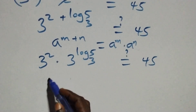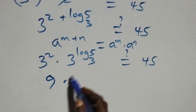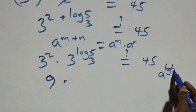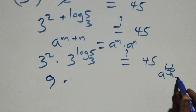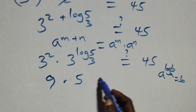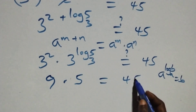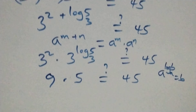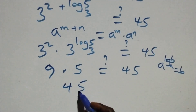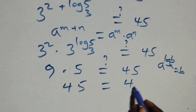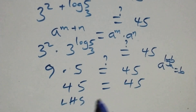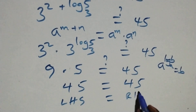And 3 squared is 9. Then it follows that when we have a raised to power log b to base a, this equals b. So 3 raised to power log 5 base 3 equals 5. Therefore 9 times 5 gives 45, which equals 45. Left-hand side equals right-hand side.